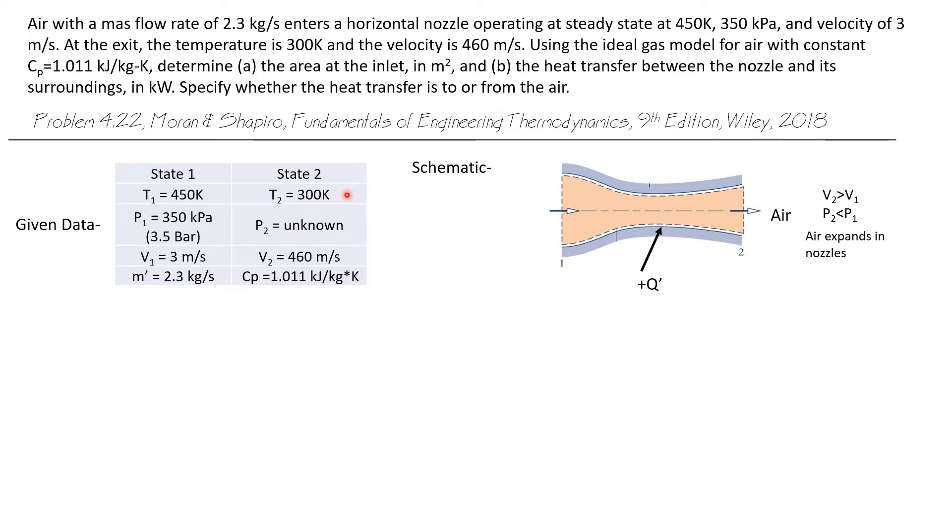The temperature at the exit is only 300 Kelvin, less than at the inlet. The pressure at the outlet is unknown. The velocity at the outlet is much greater, 460 meters per second. We're given a specific heat value: C sub P is 1.011 kilojoules per kilogram Kelvin. So if C sub P is constant, then specific heats can be taken to be constant.